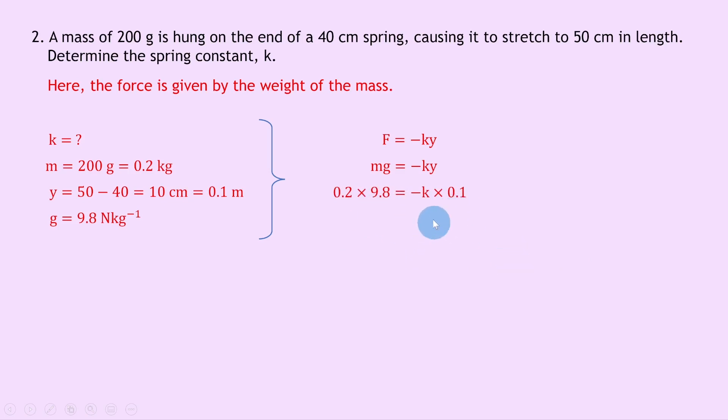Now if we want k on its own, we can divide both sides by minus 0.1, and then if you put that into your calculator we should get an answer of k is equal to minus 19.6 newtons per meter. I've put the negative sign in brackets because it's not really important here.